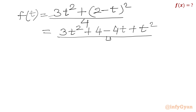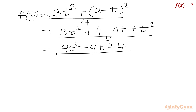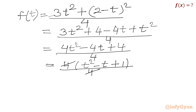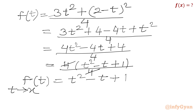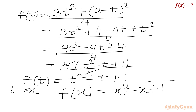Expanding (2 minus t) whole squared using the (a minus b) whole squared formula: 3t squared plus 4 minus 4t plus t squared, all over 4. So 3t squared plus t squared gives 4t squared, minus 4t, plus 4, over 4. Taking 4 common from the numerator gives 4 times (t squared minus t plus 1) over 4, and the 4s cancel. So finally f of t equals t squared minus t plus 1. Changing the variable from t to x gives us f of x equals x squared minus x plus 1. This is our final answer.